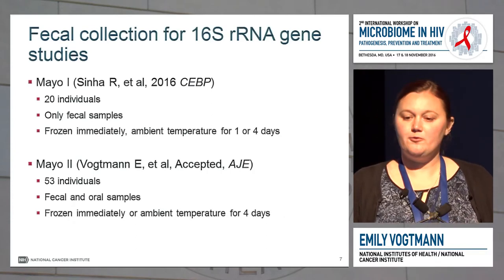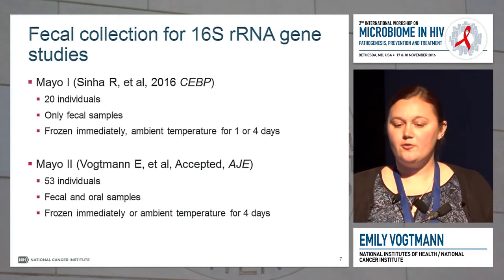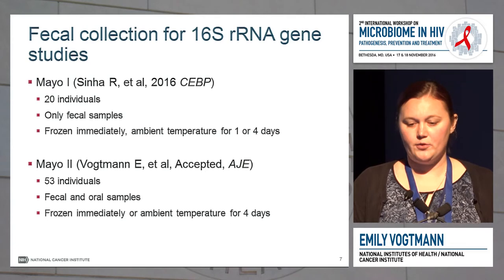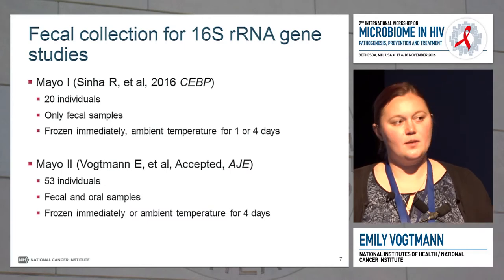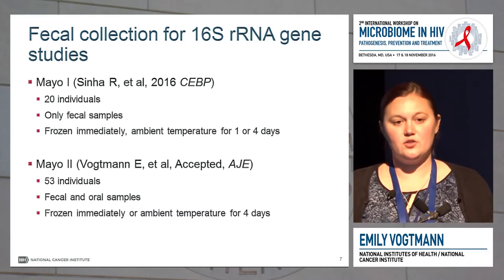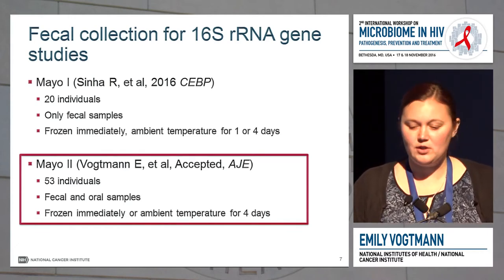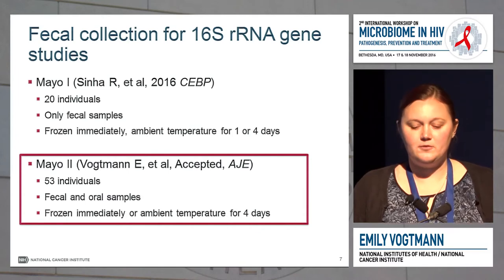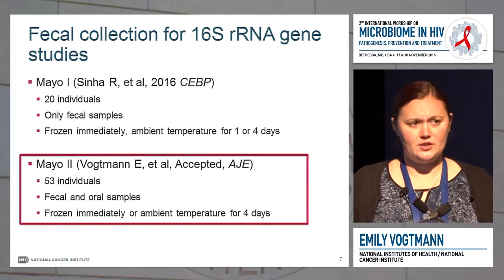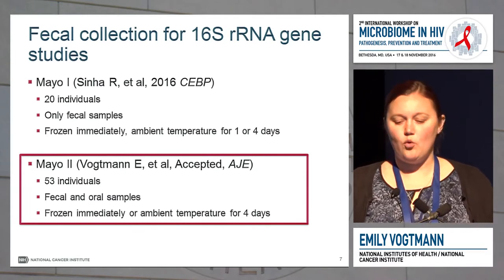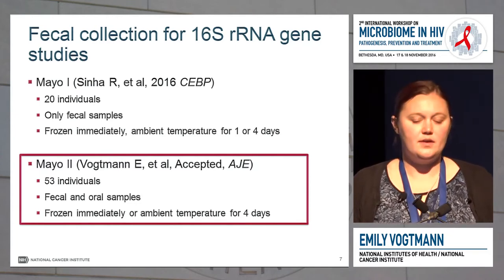We've evaluated a couple of fecal collection methods for use in 16S rRNA gene sequencing studies. The first study was published in CEBP. We did find some methods that were really suboptimal, and these were excluded in our second study, which we called Mayo II. Both were conducted at Mayo Clinic. In this study, we had 53 individuals. We collected fecal and oral samples using all of the different collection methods.